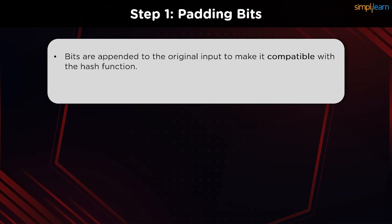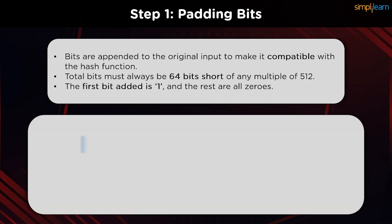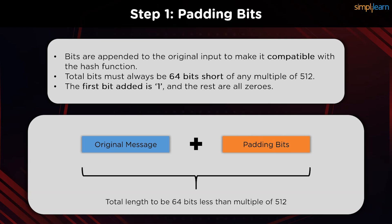The first step is to make the plain text compatible with the hash function. To do this, we need to pad the bits in the message. When we receive the input string, we have to make sure the size is 64 bits short of a multiple of 512. When it comes to padding the bits, we must add a one first, followed by zeros, to round out the extra characters. This prepares a string to have a length of just 64 bits less than any multiple of 512.